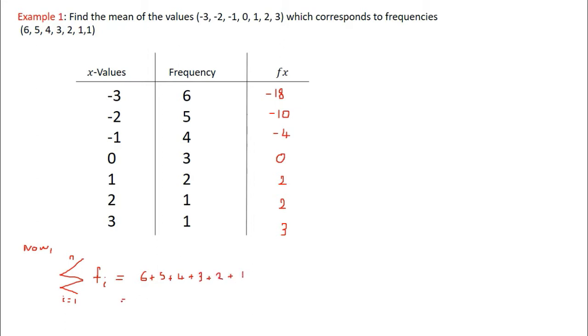So now for the sum of our f x, we have from i equal 1 up to n of our f x, and that's equal to minus 18 plus minus 10 plus minus 4 plus 0 plus 2 plus 2 plus 3, and that's equal to minus 25.